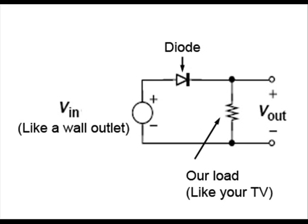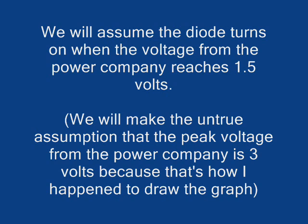A simple rectifier can be made by putting a diode between an AC source and the device it will power. This is a half-wave rectifier. The AC voltage source on the left is like the power company. The diode does the rectifying, and the resistor is how we represent the device we want to power. Sometimes, this is called the load. We will assume the diode turns on when the voltage from the power company reaches 1.5 volts.